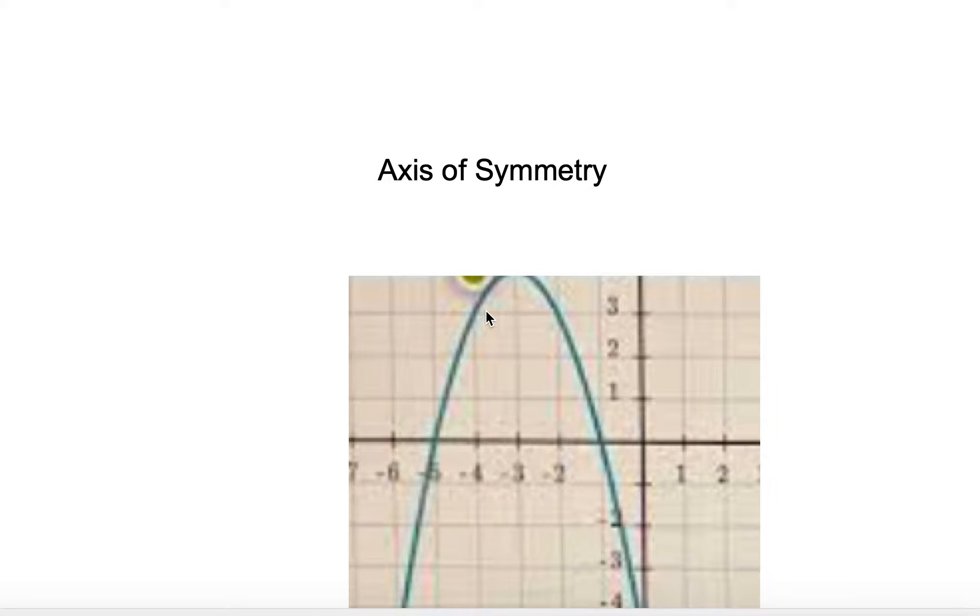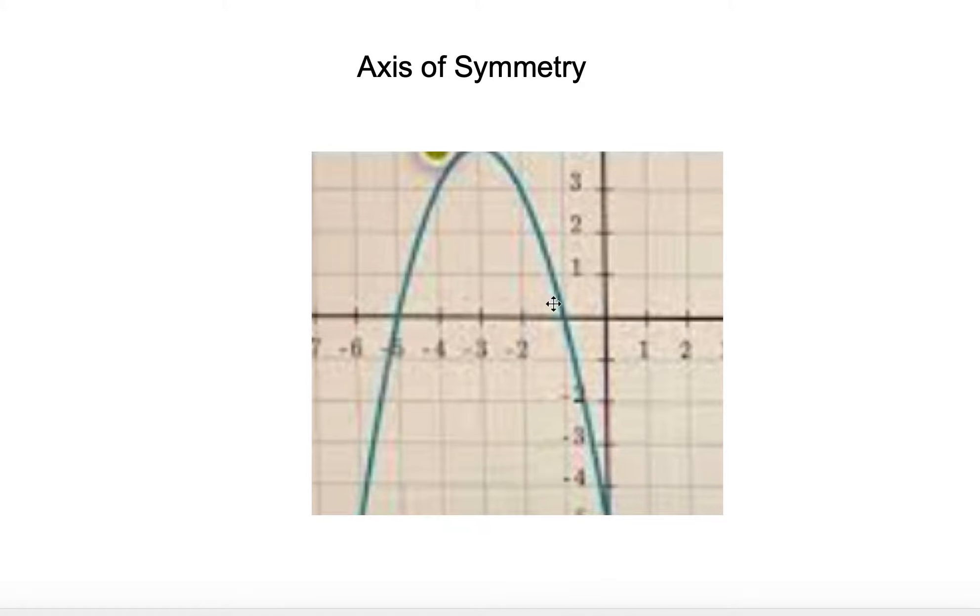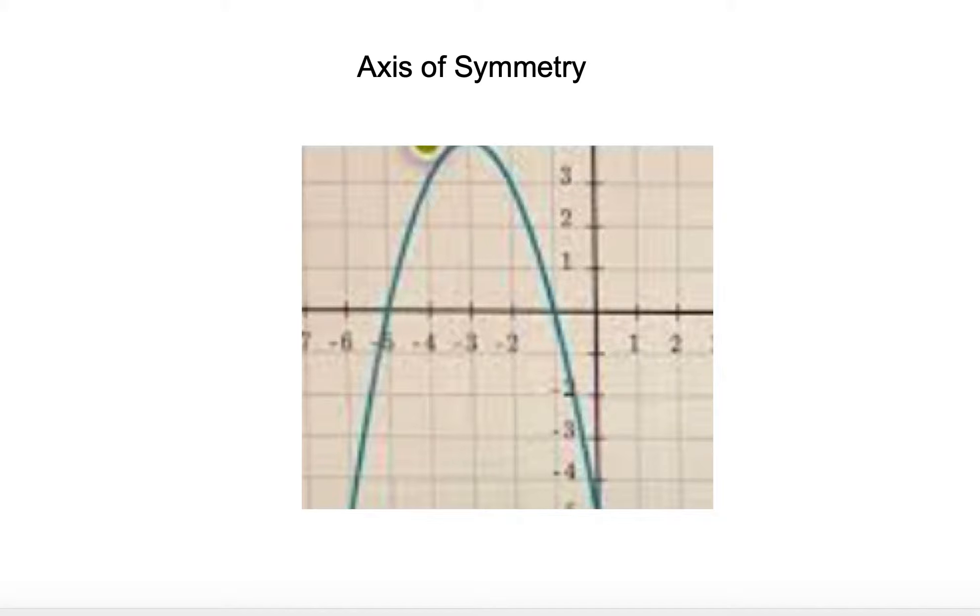The other thing is a really quick way to be able to find the axis of symmetry. And basically, if you have your two x-intercepts, the axis of symmetry is going to be smack dab in between.